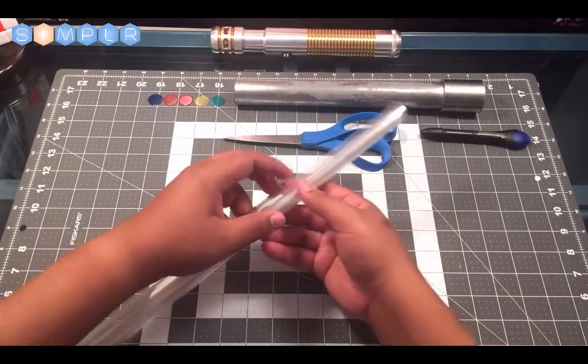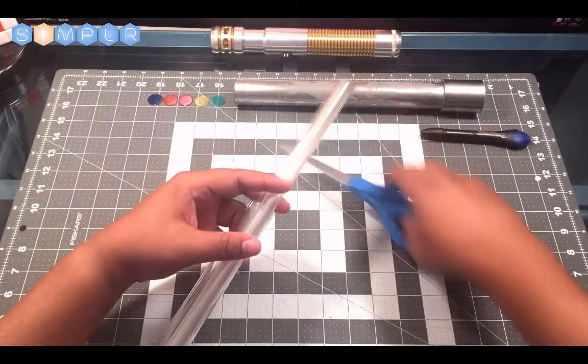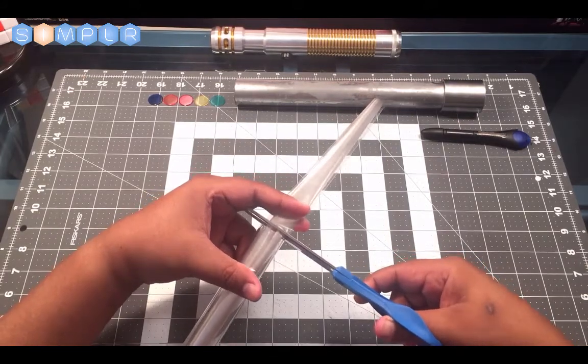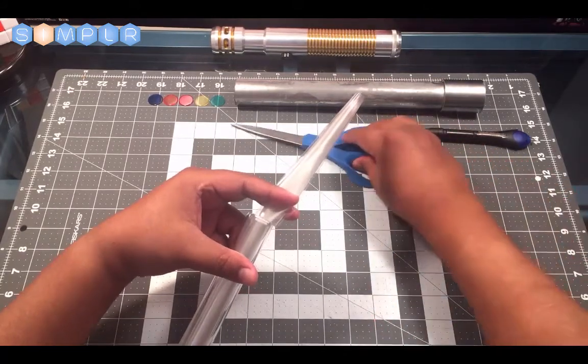First thing we need to do is take our scissors and chop off the excess cellophane because we're not going to need that anymore.